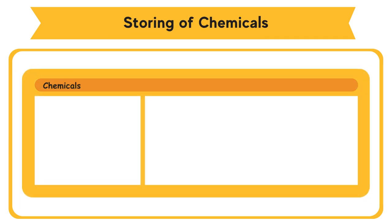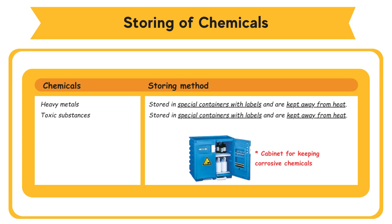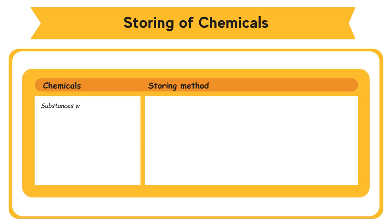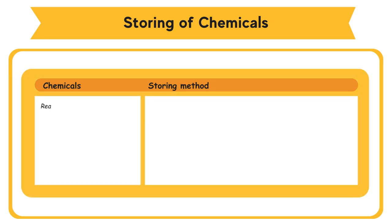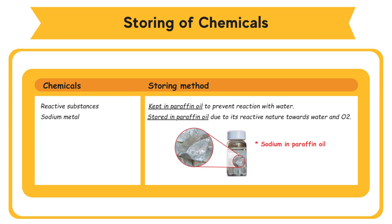Storing of chemicals: Heavy metals are stored in special containers with labels and kept away from heat. Toxic substances are stored in special containers with labels and kept away from heat. Substances that are easily decomposed are stored in dark bottles — for example, silver nitrate solution is stored in dark bottles because it can be decomposed by light. Substances with pH less than 5 and pH greater than 9 are stored in special locked storage. Reactive substances, like sodium metal, are kept in paraffin oil to prevent reaction with water and oxygen.